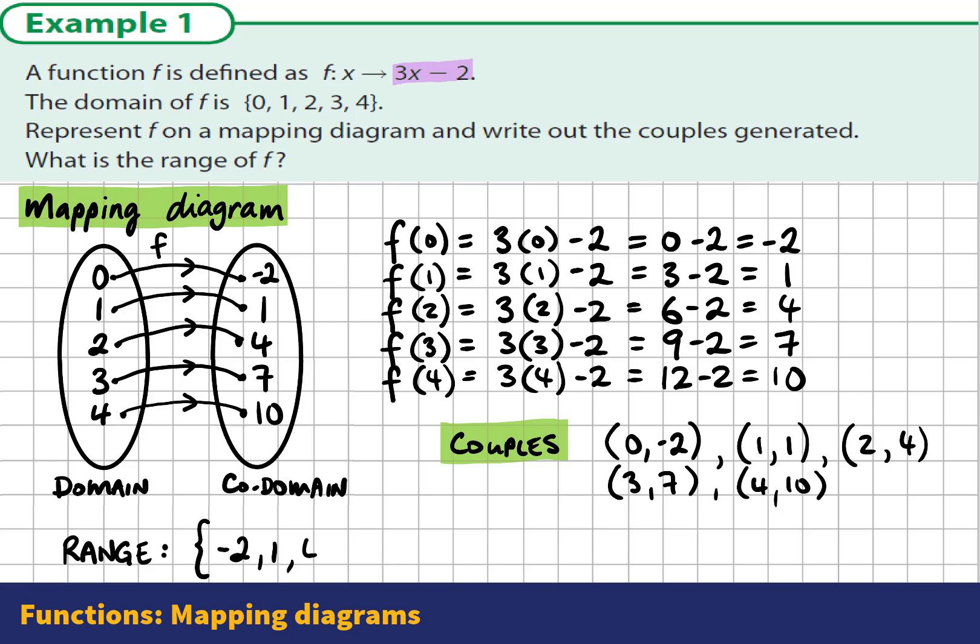are negative 2, 1, 4, 7, and 10. There's exactly 5 elements in the range.